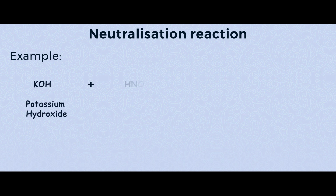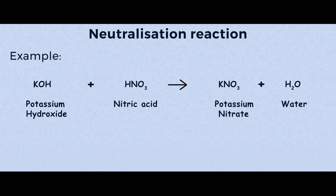Let's look at a second example: potassium hydroxide and nitric acid. When these two react together, form water first from OH and H giving H₂O. Then what's left is K and NO₃. Combining these gives the salt potassium nitrate. So potassium hydroxide reacts with nitric acid to give potassium nitrate and water.